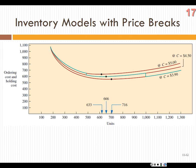Visually: at a $5 price, EOQ = 633, but that only applies for 0–499 units, so it's outside the feasible range. At $4.75, EOQ = 667 — that is in the feasible range and we calculated its total annual cost. At $3.90, EOQ = 716 but I need to order at least 1,000 units, so I do total annual cost at Q = 1,000 and compare to find the lowest total cost.